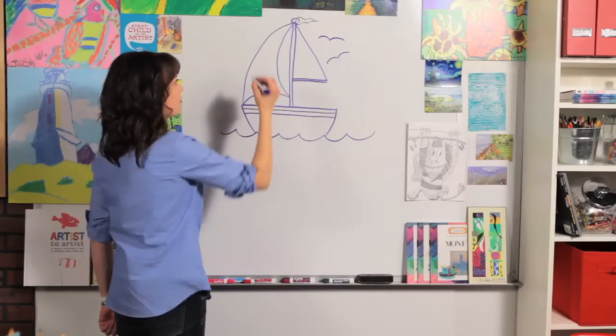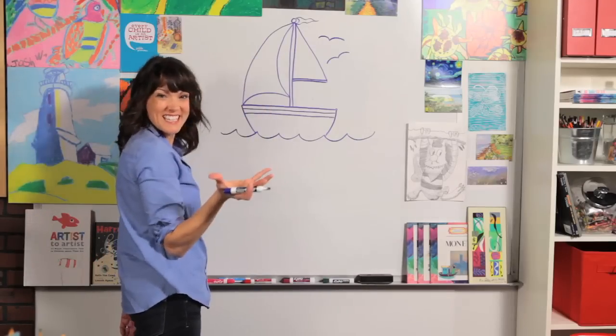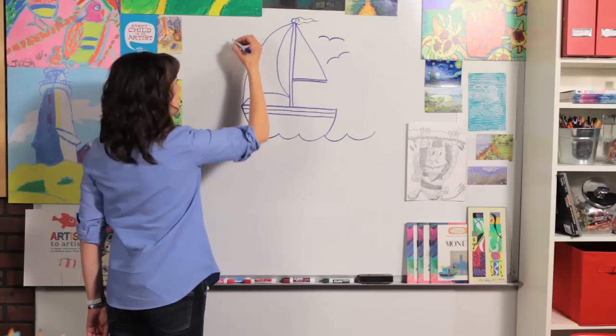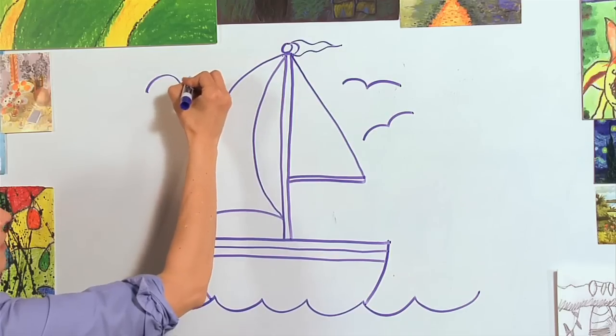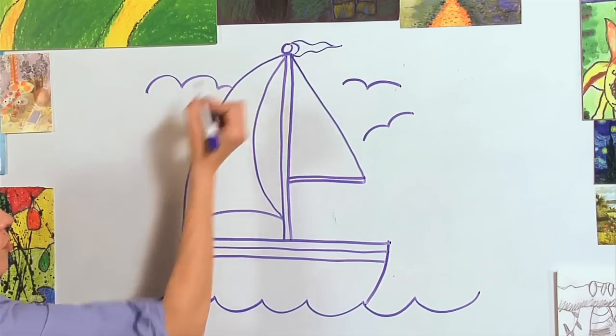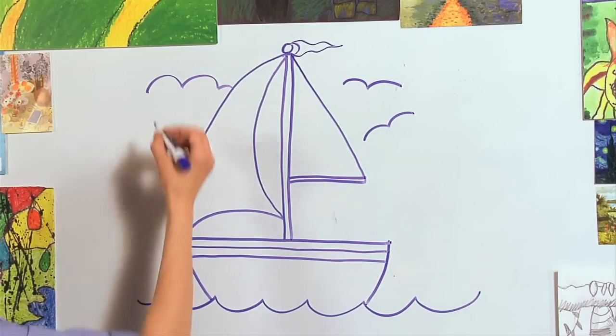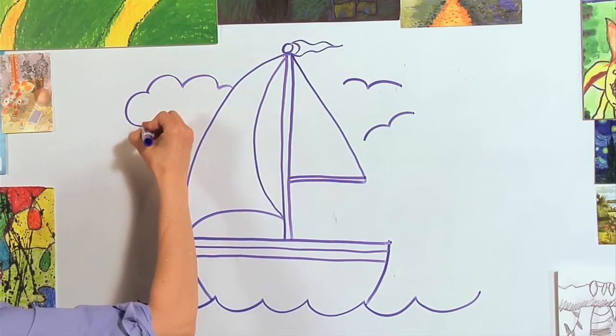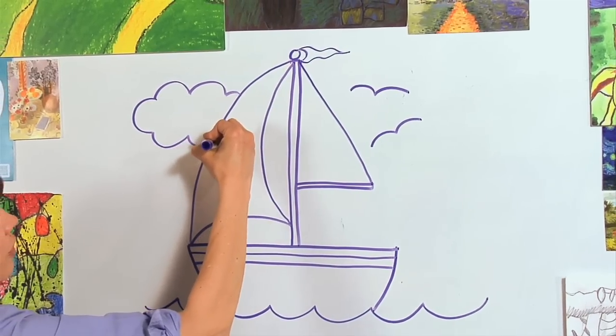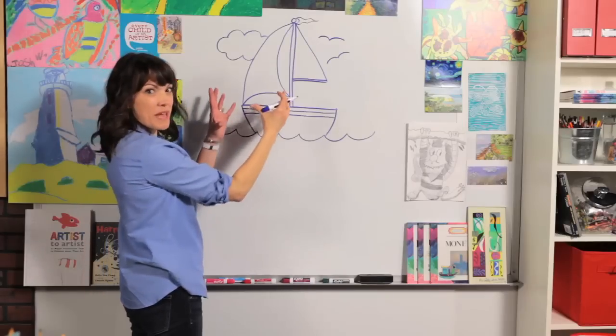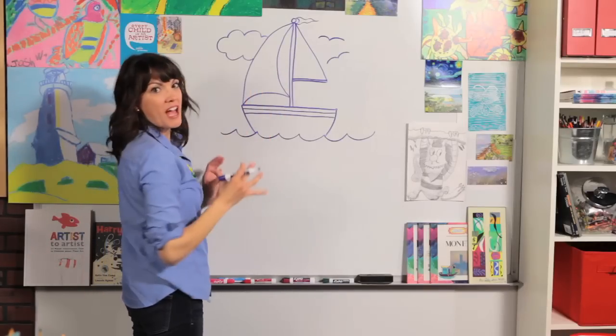You might even want to add a couple of fluffy clouds, curved lines. Again, really easy, just curve, curve. And you might even just come right into that sail like it's behind the sailboat. Curve, curve, curve right into that sail. That gives our painting a little bit of depth because the clouds behind the sailboat.